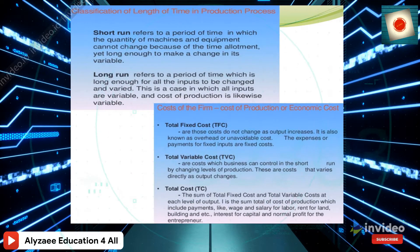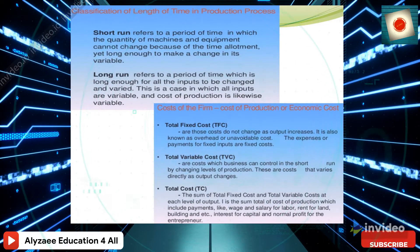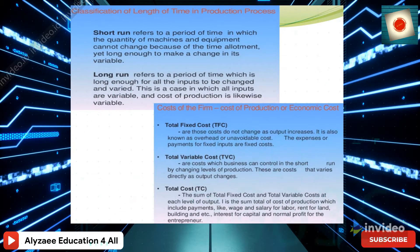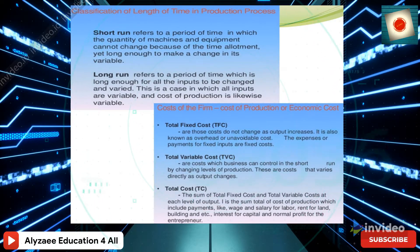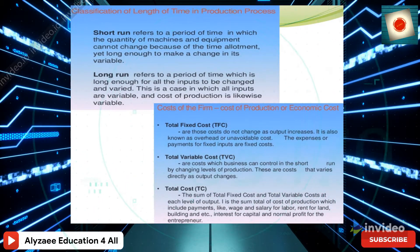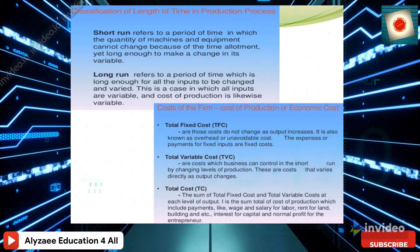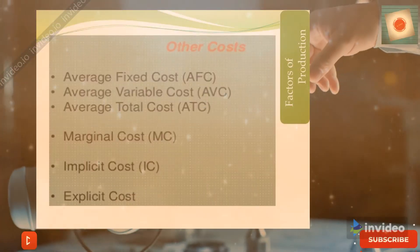Total cost is the sum total of cost of production, which includes payments like wages or salaries for labor, rent for land and buildings, interest for capital, and normal profit for entrepreneurial ownership.